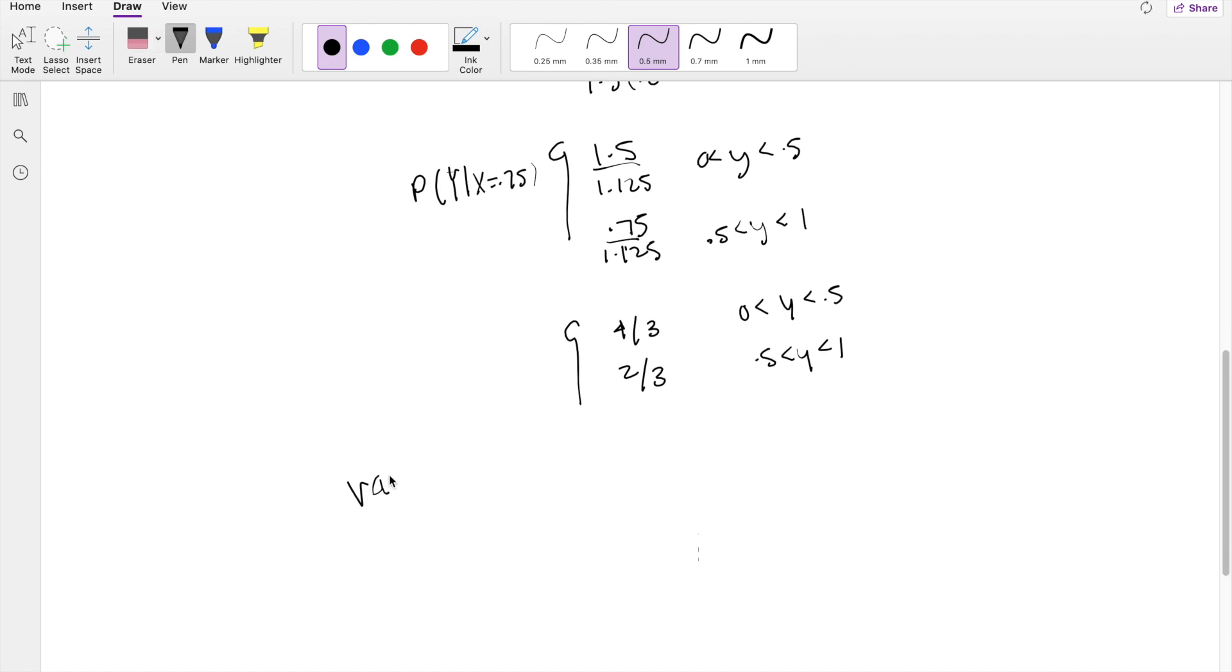We're looking for the variance of y, given x is equal to 0.75. So this is equal to, as always, the expectation of y, given x, the second moment, plus the expectation of y, given x, the first moment, squared.